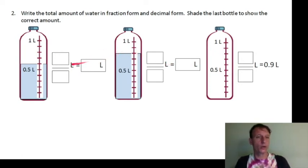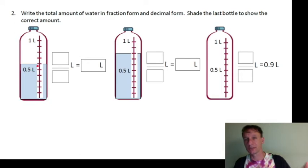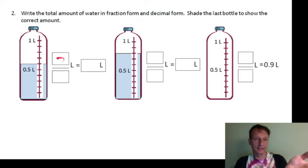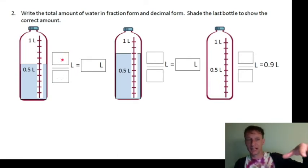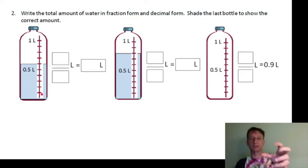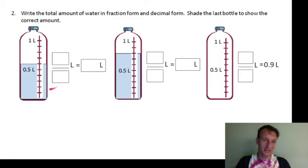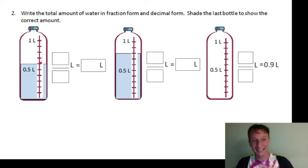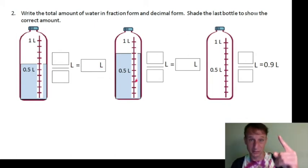This one-liter bottle is filled to a certain level — and notice the liter abbreviation is a capital L, to distinguish it from the number one. I initially said five tenths, but actually count carefully: one, two, three, four, five, six — it's filled to six tenths liter. My apologies! Write that as the fraction six tenths, and in decimal form as well. The next bottle: count up — one, two, three, four, five, six, seven, eight — eight tenths liter.